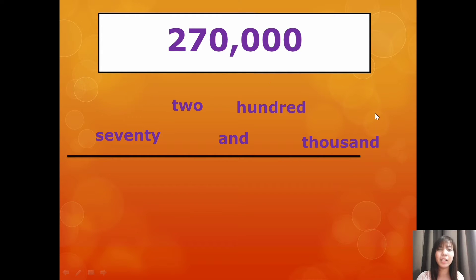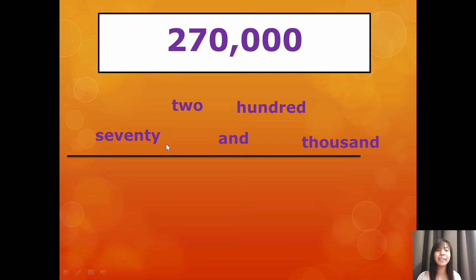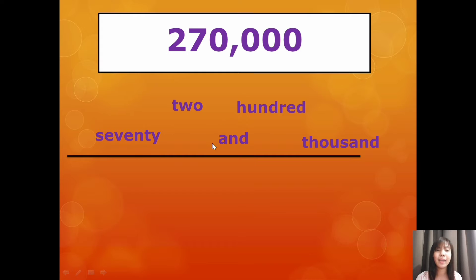So, we have here some vocabulary that we need in writing numbers or in putting the numbers in words. So, we have here — please read — 70, spelled as S-E-V-E-N-T-Y, seventy. Next: two, T-W-O. Next: and, A-N-D. Hundred, H-U-N-D-R-E-D. Thousand, T-H-O-U-S-A-N-D.